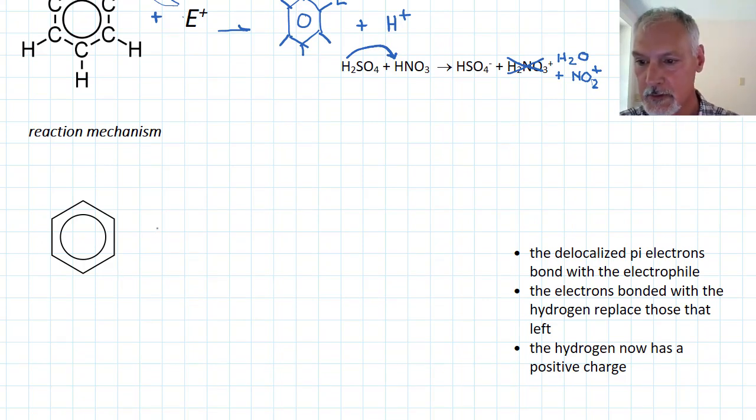I'm going to use this diagram to represent benzene, and here I'm going to represent the electrophile with this symbol. The first thing that happens is the electrons that are present here in this ring move to attract and draw in and bond with my electrophile.